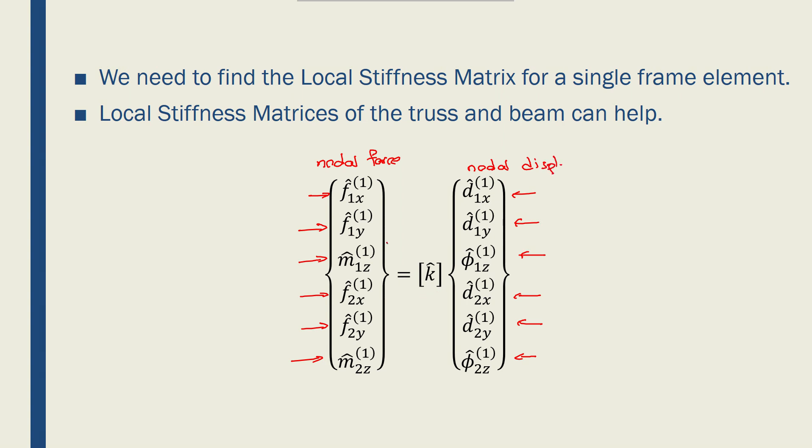Because we have 6 degrees of freedom, 2 nodes per element, 3 degrees of freedom per node, we're looking for a 6x6 stiffness matrix for a frame element.